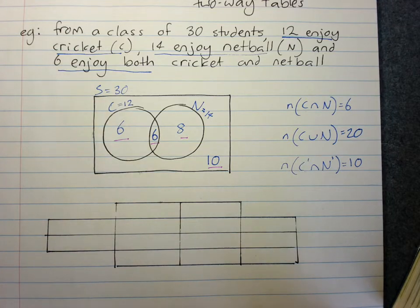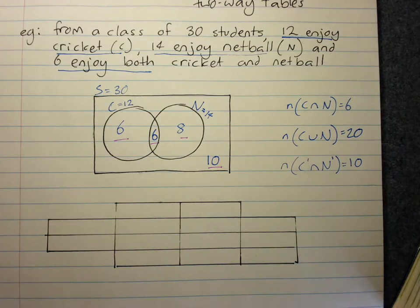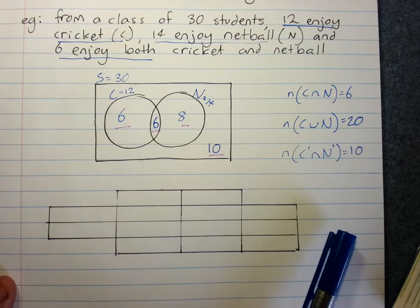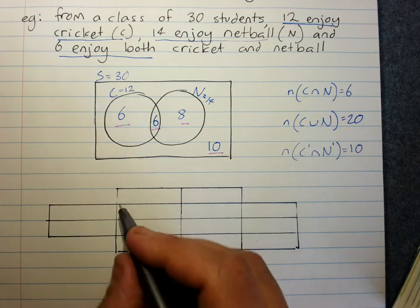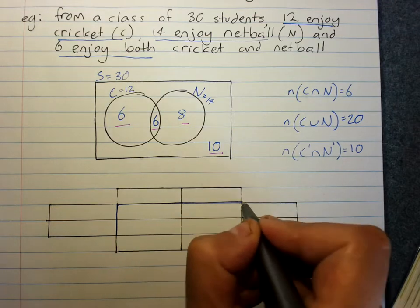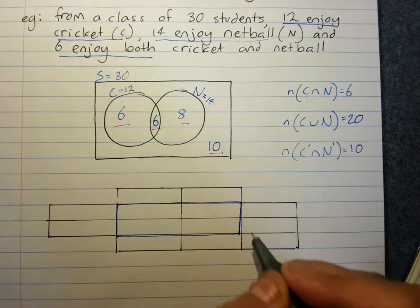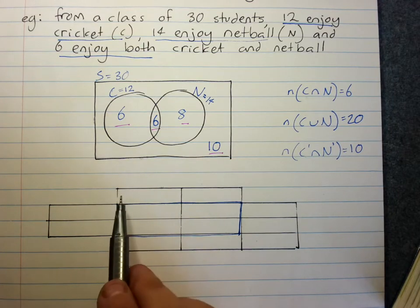This information can also go into a two-way table. A two-way table gets a little more information — it includes not only the event 'likes cricket' but also the complementary event 'does not like cricket.' The important part of the two-way table is the four interior zones.